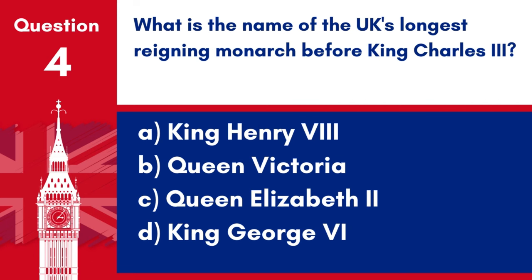Question 4. What is the name of the UK's longest reigning monarch before King Charles III? A. King Henry VIII. B. Queen Victoria. C. Queen Elizabeth II. D. King George VI. Answer: C. Queen Elizabeth II.